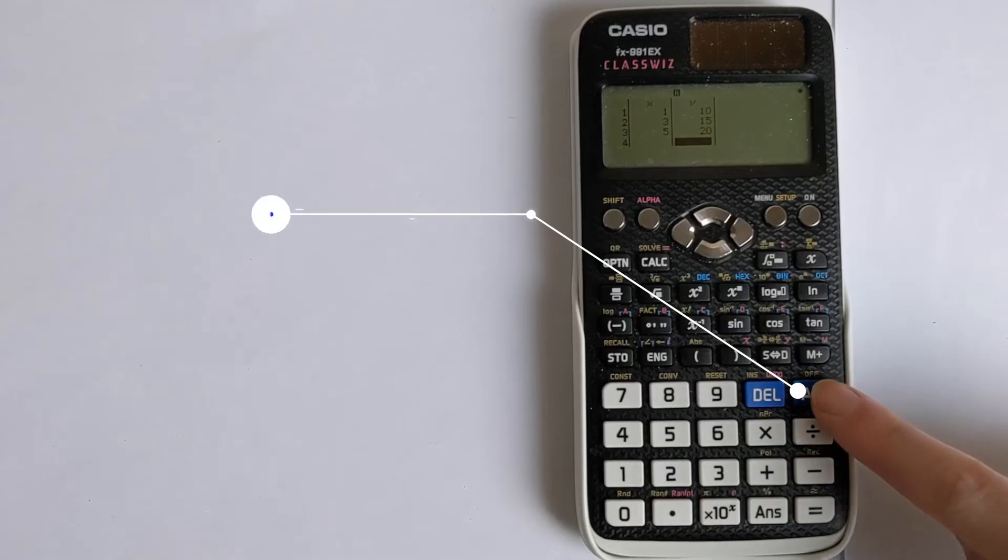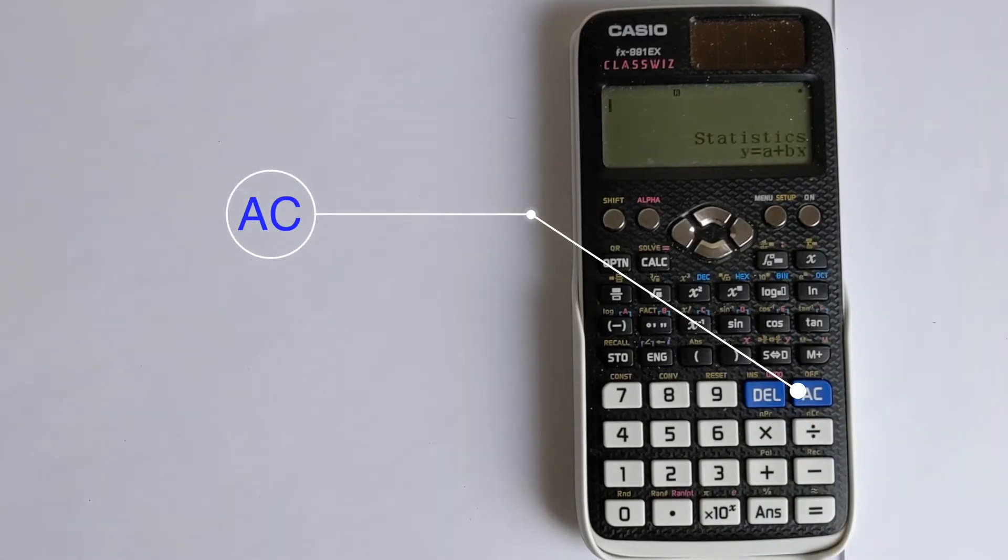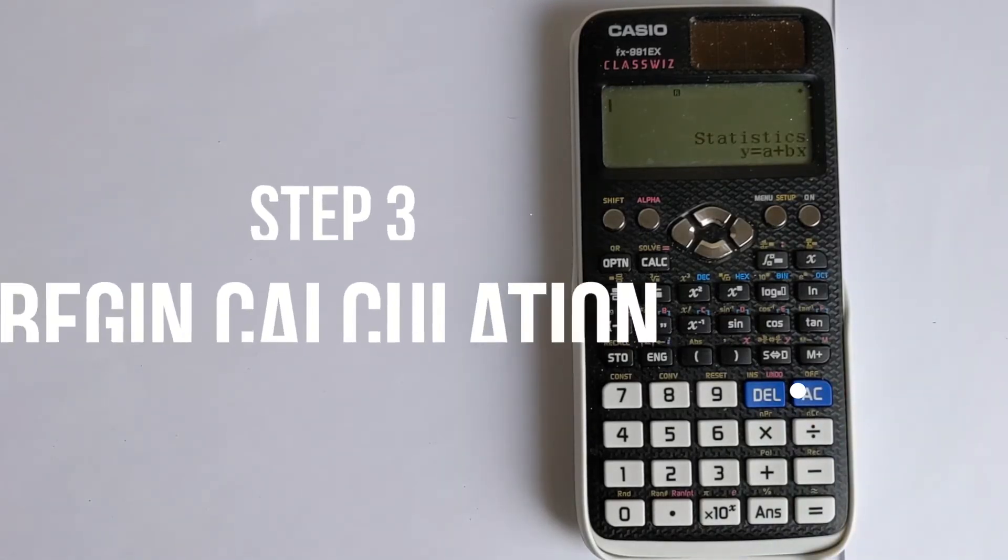You can then press the AC button. This is now saved to the calculator's memory and will be used for the calculations.